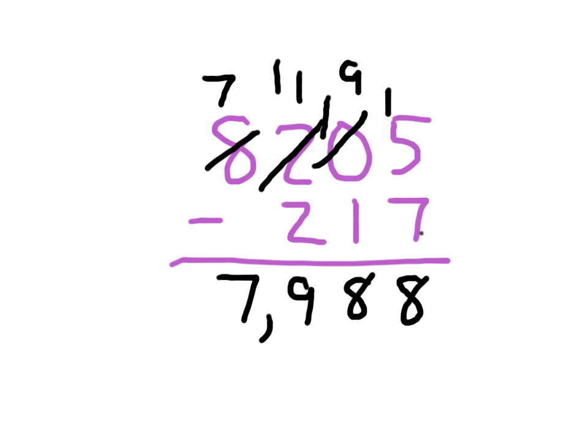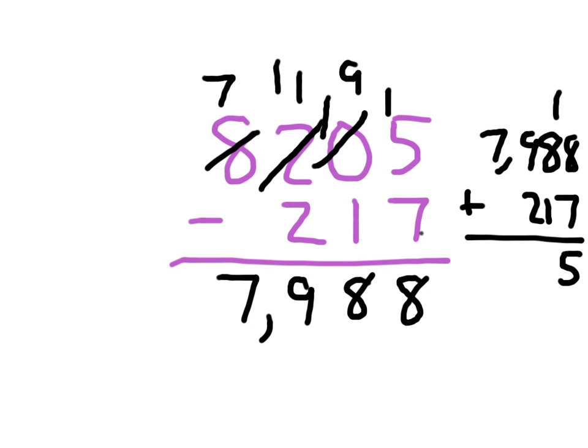Don't believe me? I'm going to go ahead and show you that check. 7,988 plus that 217. 8 plus 7 is 15. 5 regroup the 1. 1 plus 8 plus 1 does equal 10. 0 regroup the 1. 1 and 9 is 10 plus 2 is 12. 2 regroup the 1. 1 and 7 is 8. 8,205. That's my original number right there. So my answer does check.